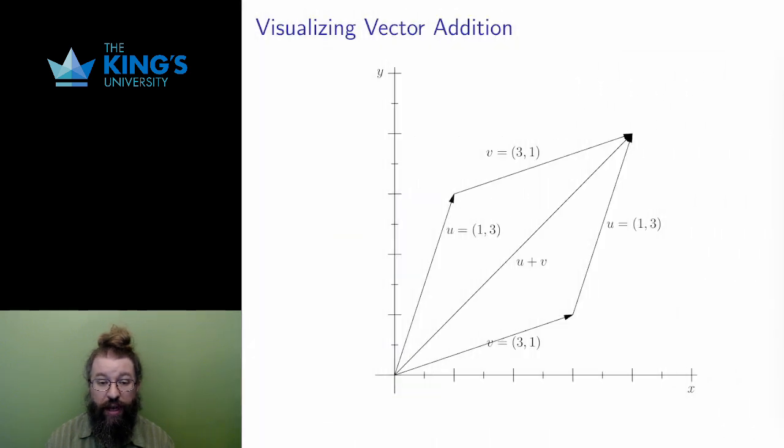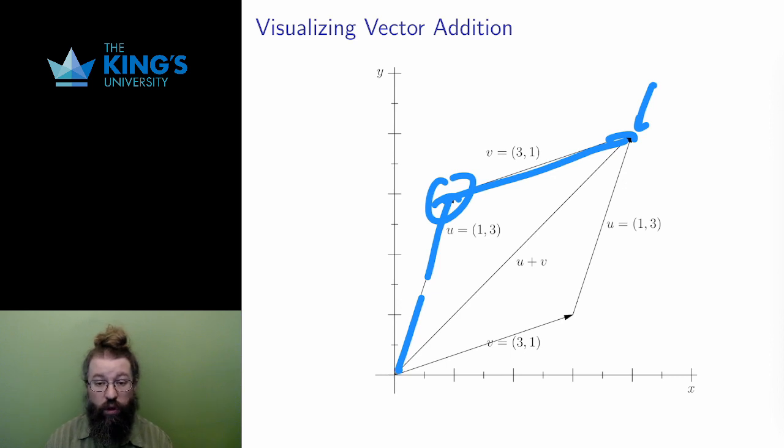Visually, adding vectors means putting one vector at the end of the other, and seeing where the second vector points. Using the second vector as a local direction vector, essentially. You can see in the diagram that the order of addition for these two vectors doesn't matter. The result is (4,4) either way.